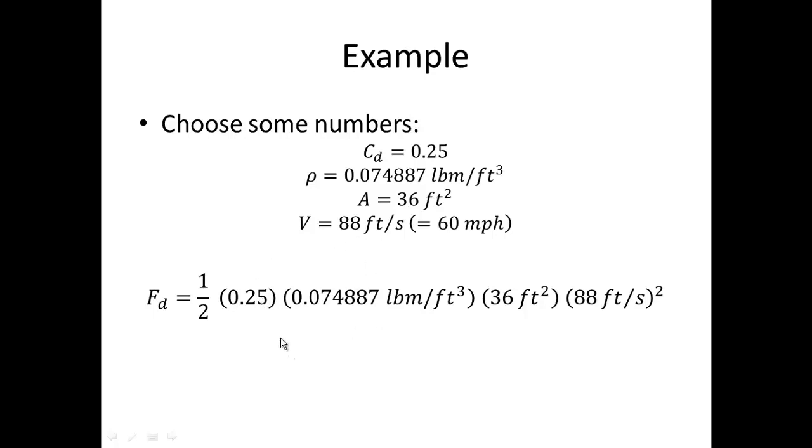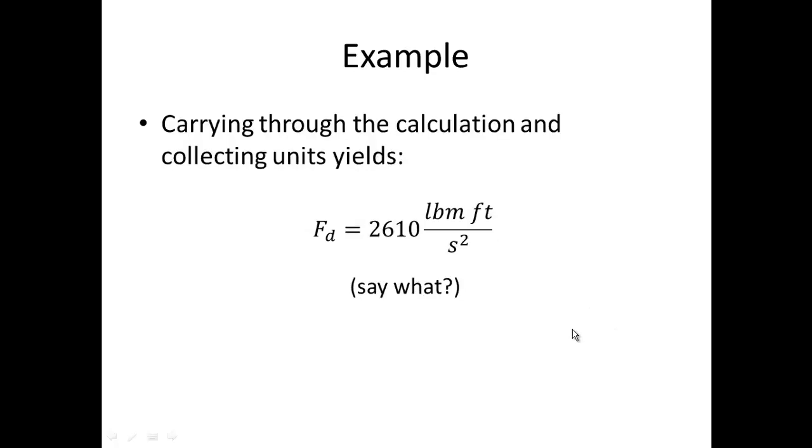So you put those numbers into the drag force equation and we can certainly in our calculator calculate one half times 0.25 and so on, so we can take care of the numbers. But focusing on the units, focusing on the feet, we have a feet squared here and then we have the 88 feet per second. So we'll have feet to the 4th in the numerator and we'll have feet cubed in the denominator which leaves a foot in the numerator and a second squared in the denominator.